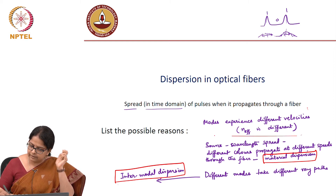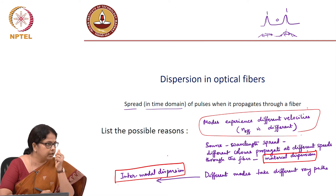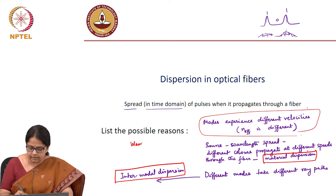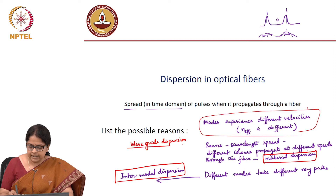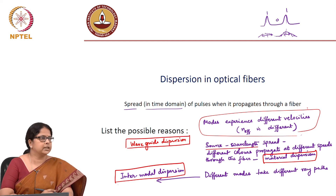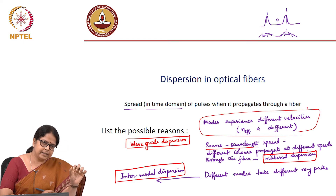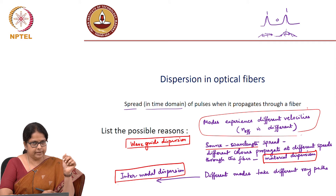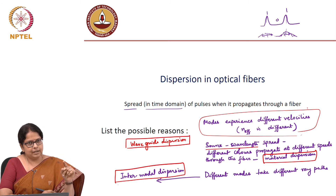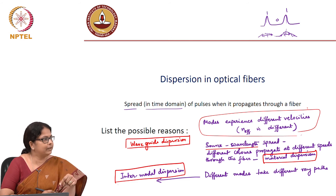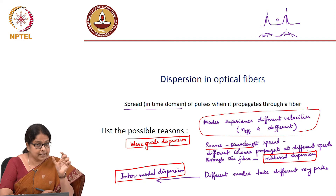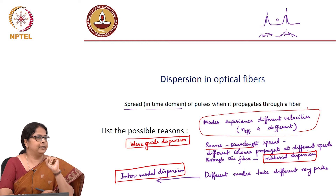Modes experiencing different velocities is a form of intermodal dispersion, but there is one more class of dispersion called waveguide dispersion. The reason for waveguide dispersion is also that the source has a wavelength spread. Because the source has a wavelength spread, lambda is different, and because lambda is different, the V number is different for different lambdas. And because V number is different, n_effective for different lambdas are different.